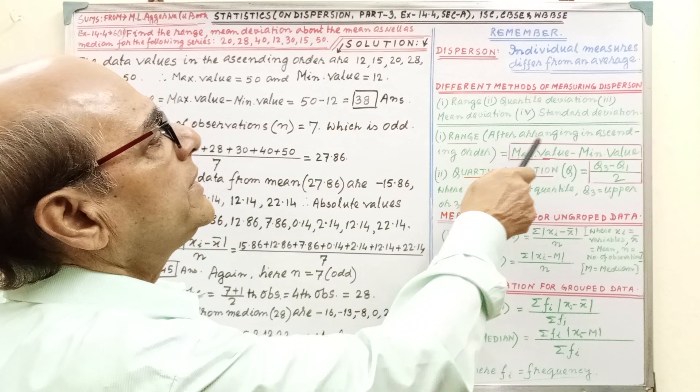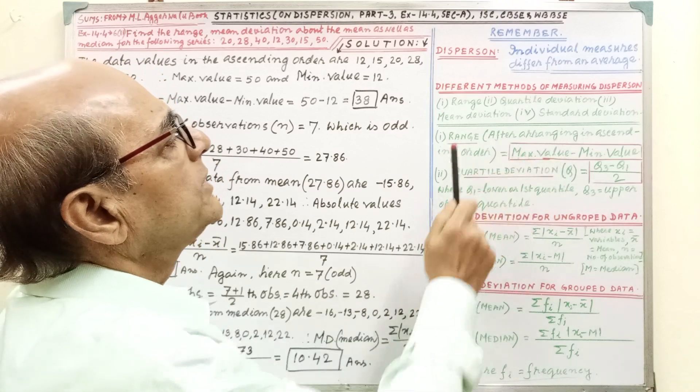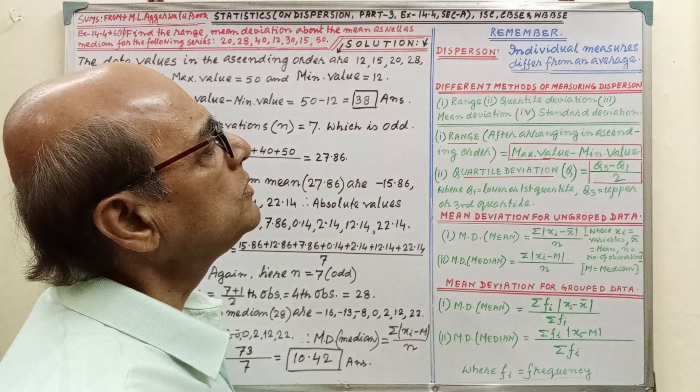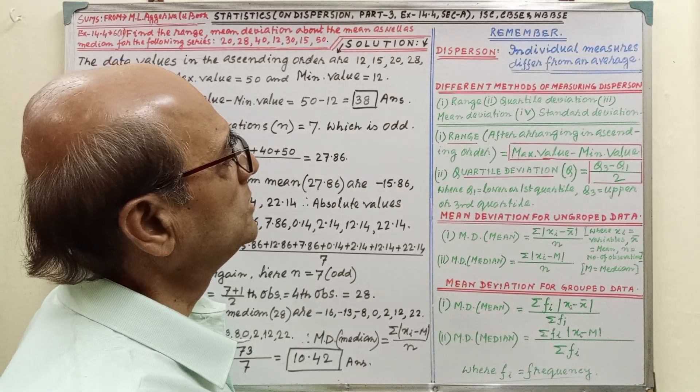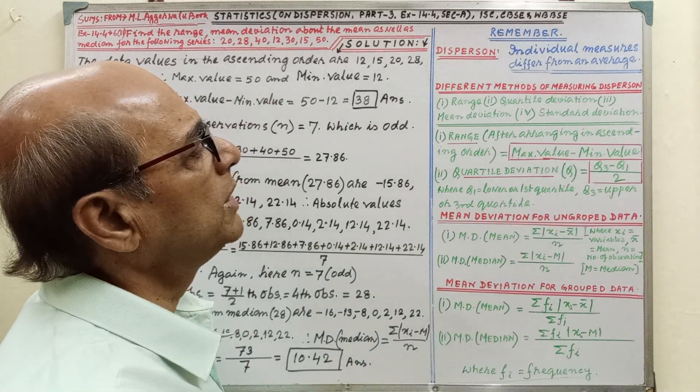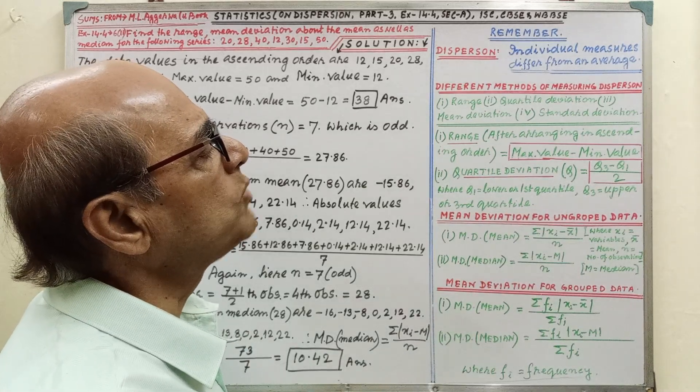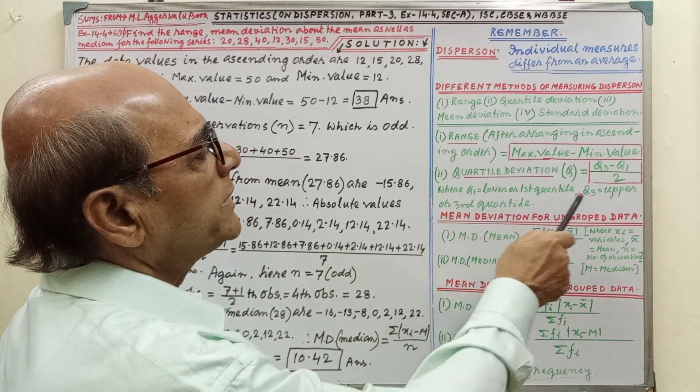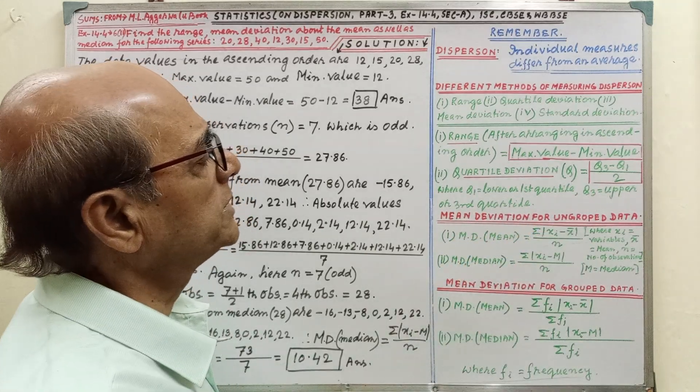Range, that is, after arranging ascending order, range equal to maximum value minus minimum value. Quartile deviation, that is, denoted by Q, equal to Q3 minus Q1 by 2. Q1 lower or first quartile, Q3 upper or third quartile.